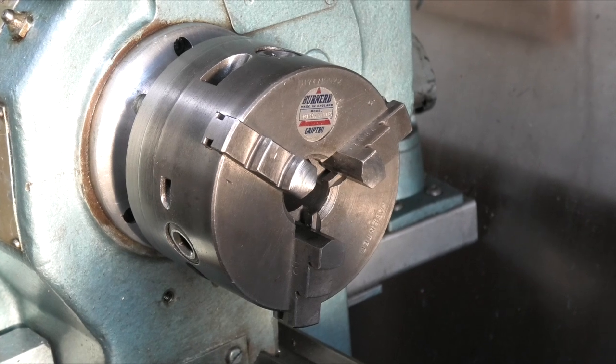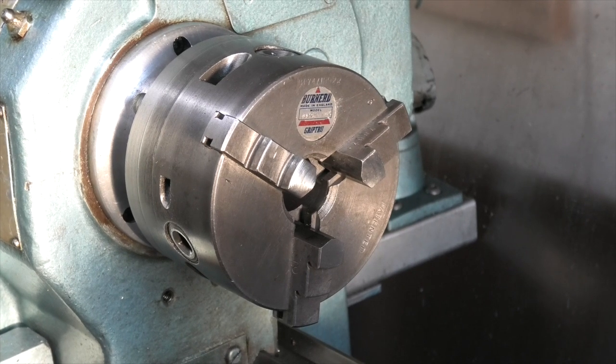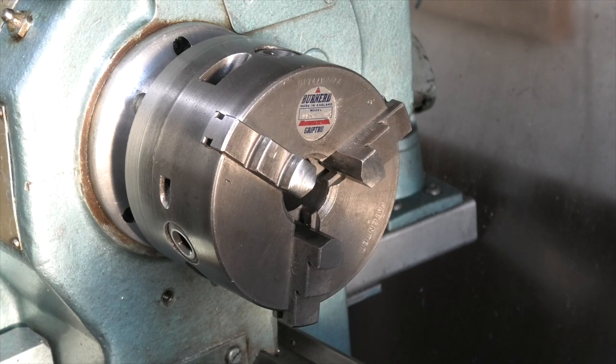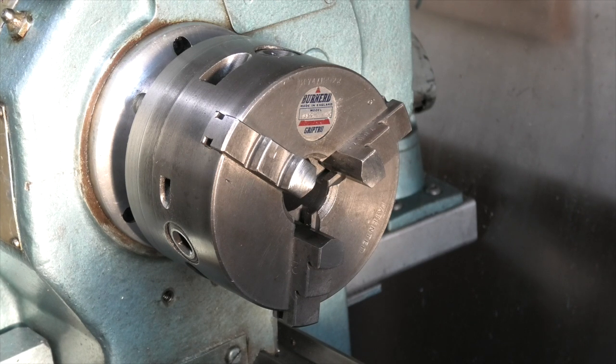Now what I want to do is get that to zero. Now I must point out that this three jaw self-centering chuck is a bernard grip true chuck. That means I can adjust the chuck to get it running through by altering the screws around the outside.